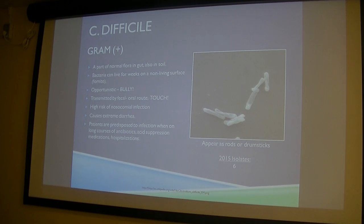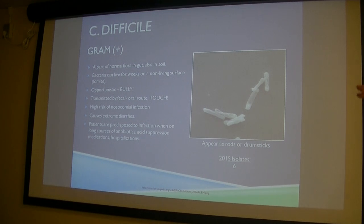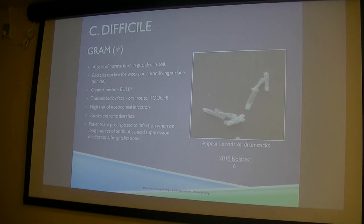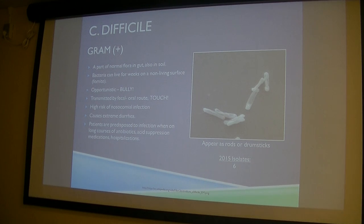C. diff doesn't quite fit the mold — it is still a gram-positive bug but doesn't look round. C. diff is part of our normal gut flora, and we're more susceptible to it when we're on antibiotics for something else. That's another reason to keep antibiotics under control: we may be giving them to people who don't really need them, and then we give them C. diff — guilty by association.